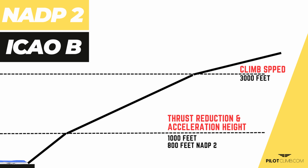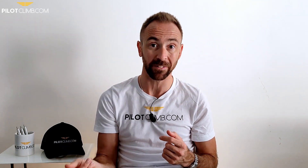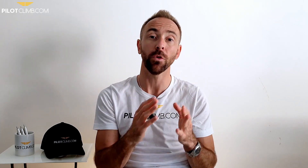What does NADP 2 / ICAO Bravo mean? It means that after take-off you can reduce thrust from take-off thrust to climb thrust at 1000 feet above Aerodrome Level, and at 1000 feet you can pitch down and start accelerating to retract the flaps. This has multiple advantages: the earlier you accelerate, the faster you fly, the earlier you reach your destination, and the sooner you retract the flaps, the less drag you produce — making the flight more efficient.